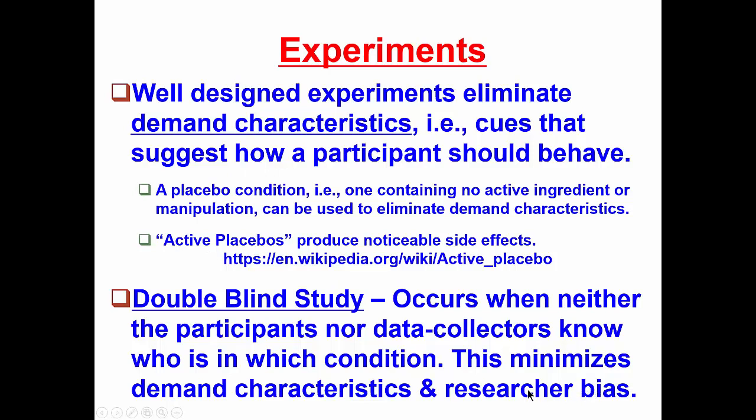That is, it might be the case that researchers otherwise would know that they had administered to one particular participant an active drug and to another one an active placebo, and the researcher might interpret their behavior differently based on the researcher's own knowledge about who is in which condition. So we can control for researcher bias by having a double-blind study.